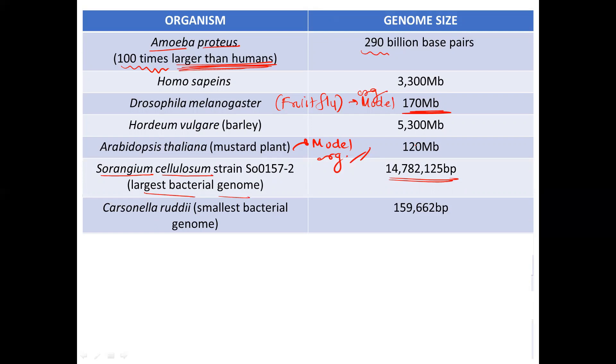So next one is Carsonella ruddii. Carsonella ruddii is the smallest bacterial genome, that is 159,662 base pairs. Then we have Escherichia coli K-12 which has a genome size of 4.6 MB. This was as in the previous ICMR paper.